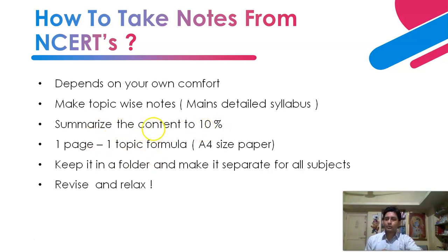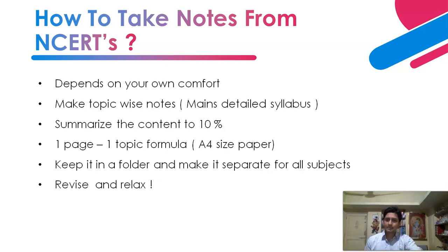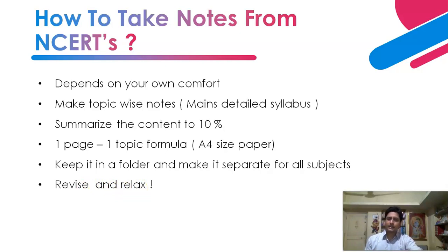You can also follow the one-page, one-topic formula: take an A4 sheet, write one topic such as 'Non-Cooperation Movement in History,' and cover its reasons, impact, consequences, and outcome — all on one page. Keep these pages in a separate folder for each subject, and keep revising them. There's no need to burden yourself — it is not rocket science. Read NCERTs, absorb the basics, process the knowledge, make notes, and revise. That's it.